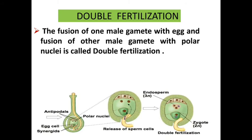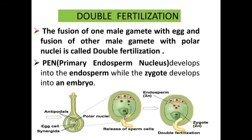The primary endosperm nucleus develops into endosperm, while the zygote develops into the embryo. Later, we will learn how the zygote develops into an embryo, and other post-fertilization events that occur in flowering plants.